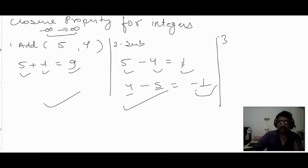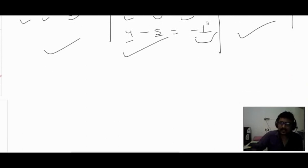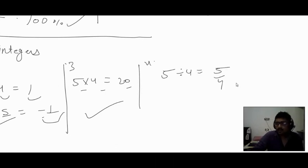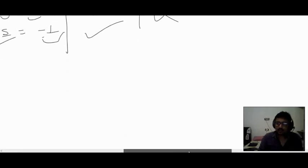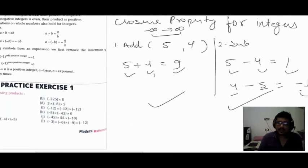Multiplication: 5 into 4 equals 20, which is an integer — so multiplication satisfies closure property for integers. Division: 5 divided by 4 gives a rational number, not necessarily an integer. So division does not satisfy closure property for integers, just as with natural numbers.